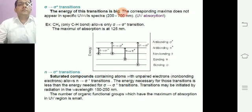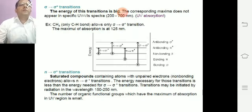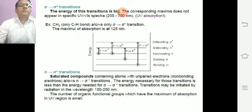For the n→σ* transition, saturated compounds containing atoms with unpaired electrons — that is, non-bonding electrons — for example, alkyl halides, allow n→σ* transitions. The energy necessary for those transitions is less than the energy needed for σ→σ* transitions. These transitions may be initiated by radiation in the wavelength range of 150 to 250 nm. The number of organic functional groups which have the maximum of absorption in the UV region is small.